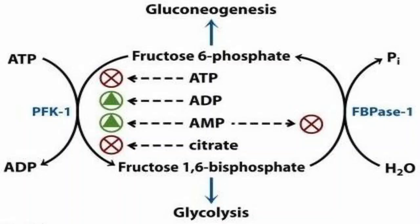The second inhibitor is citrate, an intermediate of the TCA cycle occurring in the mitochondrial matrix. When the TCA cycle is saturated — typically in a well-fed condition — citrate moves out into the cytoplasm, where it exerts a negative allosteric effect on PFK1. Elevated cytoplasmic citrate signals a well-fed state with lower energy demands, thereby decreasing the rate of glycolysis.